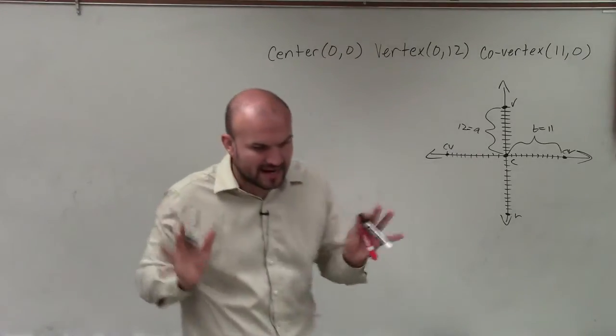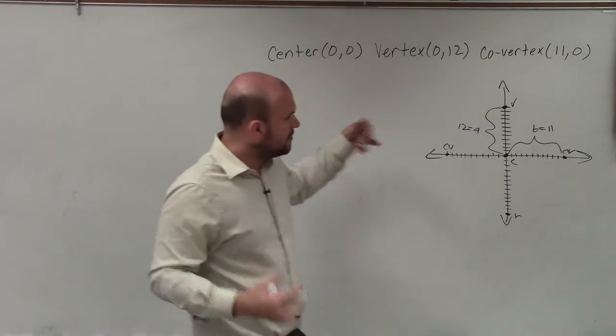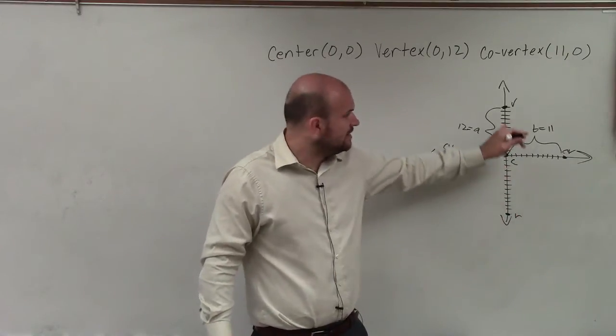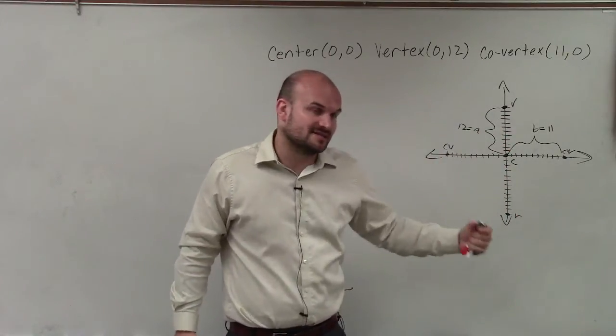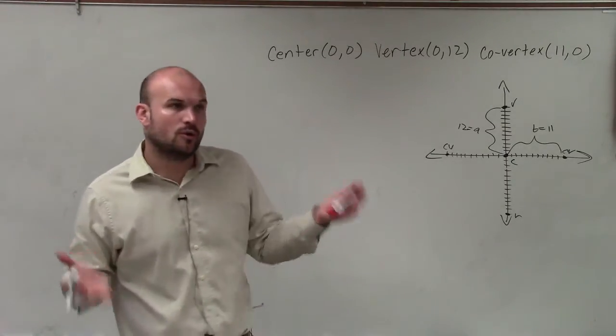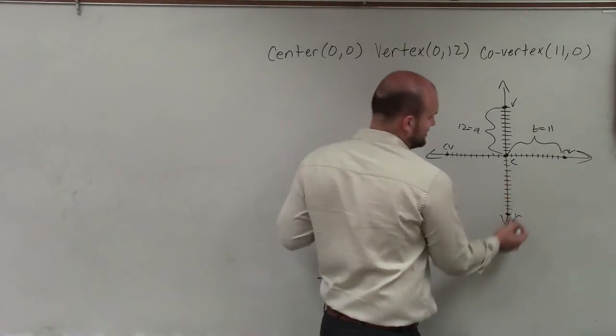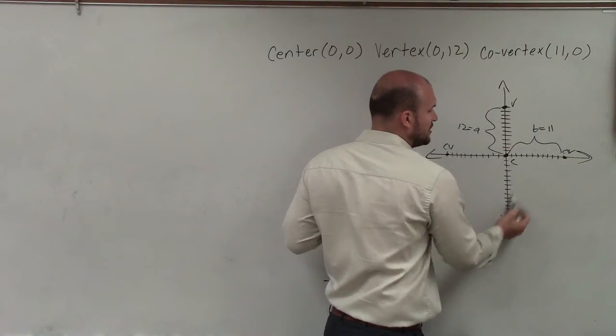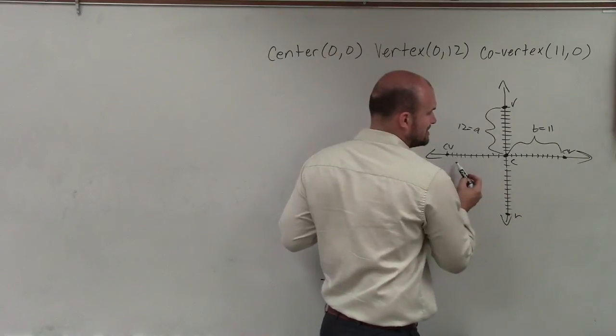But before I get to do that, the main important thing we need to understand is, remember that the vertices, the foci, and the center all lie on the major axis. And before we write the equation, we have to determine, is the major axis vertical or horizontal? Well, since my vertices are above and below my center, we can see that this major axis is going to be vertical, where the minor axis is horizontal.